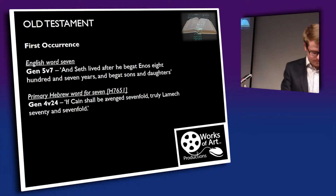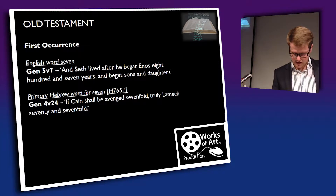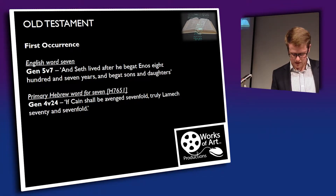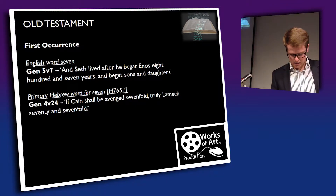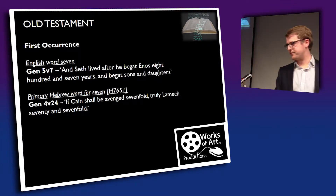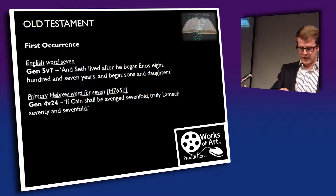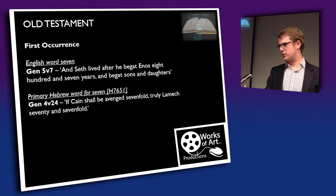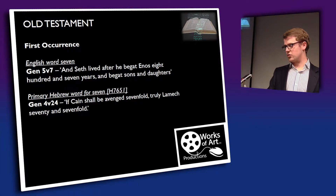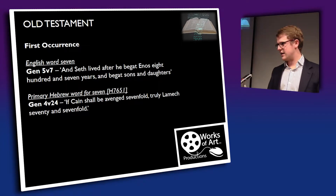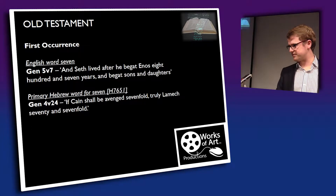Genesis 4, reading from verse 13: 'And Cain said unto the Lord, My punishment is greater than I can bear. Behold, thou hast driven me out from the face of the earth; from thy face shall I be hid, and I shall be a fugitive and a vagabond; every one that findeth me shall slay me. And the Lord said, Whosoever slayeth Cain, vengeance shall be taken on him sevenfold. And the Lord set a mark upon Cain.' The word 'sevenfold' here is a different word — Strong's 7659, 'shiv'atayim' — which only comes six times in scripture. That is not the primary word we're looking at.